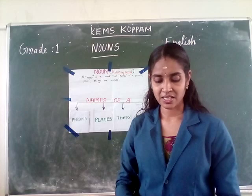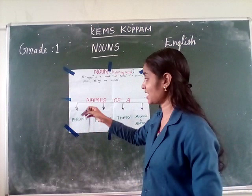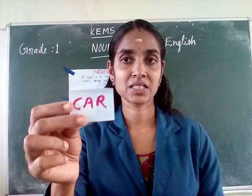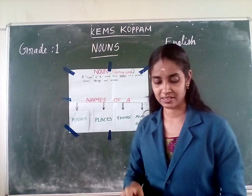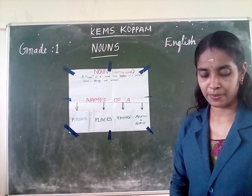And this one — boy. It's a person's name. Put it in the first box: persons. Then — car. It's a vehicle name and it's a thing, so put it in the third column. And this one — crow. It's a bird, so the fourth box.